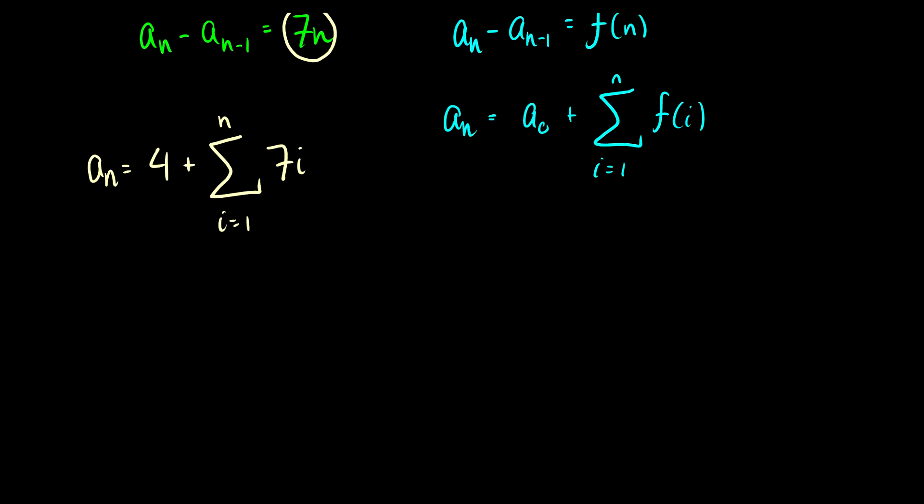Okay, so we can simplify this a bit. This is 4 and because 7 is a constant term we can factor the 7 out. This will be 7 times the sum from 1 to n of i. So what is the sum of i from i equals 1 to n? Well you may remember this from calculus or your discrete math course. This is just n times n plus 1 over 2.